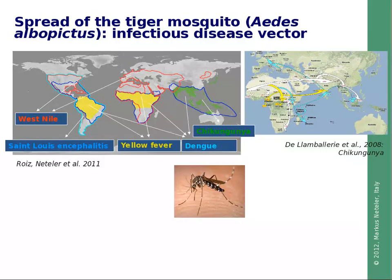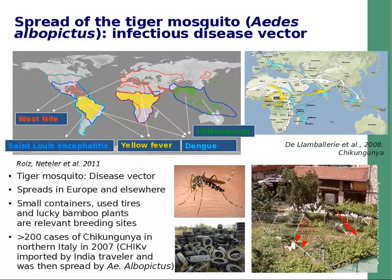Looking at applications, an important topic is the spread of the tiger mosquito Aedes albopictus, which is an infectious disease vector. The map shows different diseases transmitted by this vector and also its distribution. It is now spreading in Europe as well, though it has been known in other parts of the world for decades. It survives and breeds in small containers, including tires and lucky bamboo plants. In 2007, there were more than 200 cases of chikungunya fever, imported by a traveler and spread by Aedes albopictus — the first notable case of tropical disease spread in a non-tropical area.